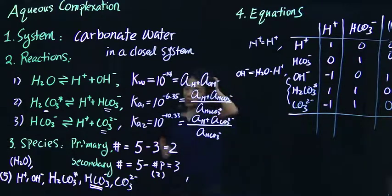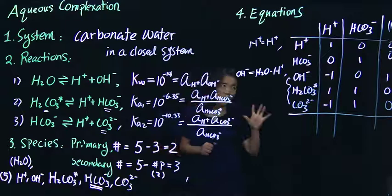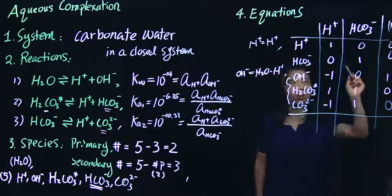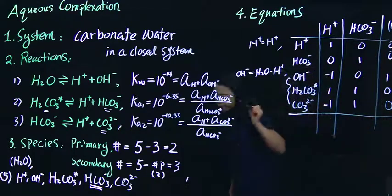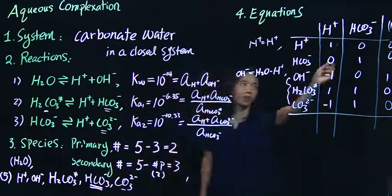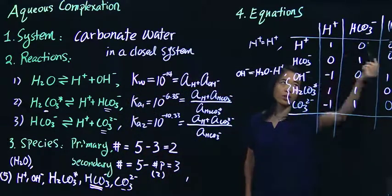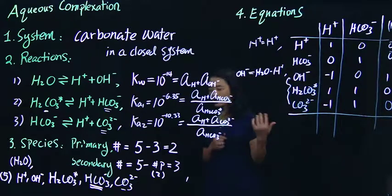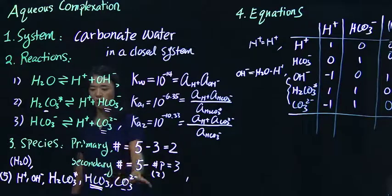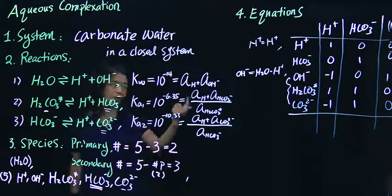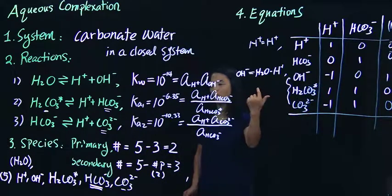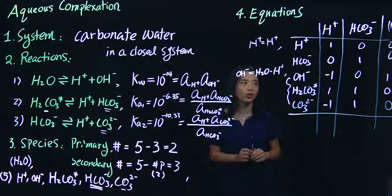This is not necessarily the only set of primary species — different combinations are possible. For example, you could use carbonate as a primary species and use bicarbonate as a secondary species. As long as you pick one of the carbonate species as a primary species and either hydrogen ion or OH⁻ as the other primary species, you should be good to go for this system.